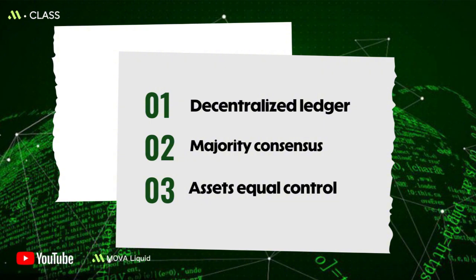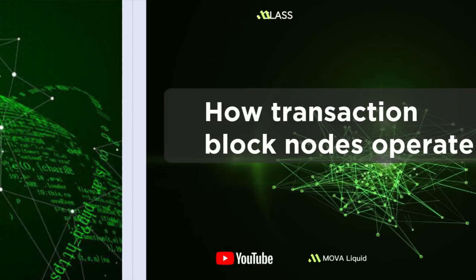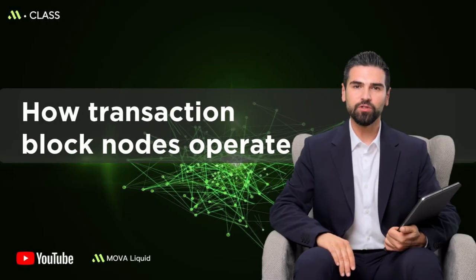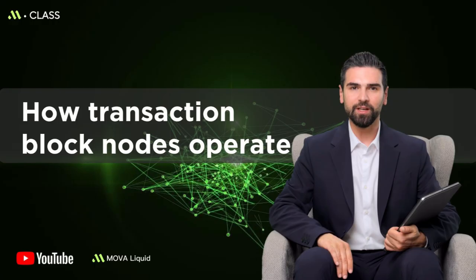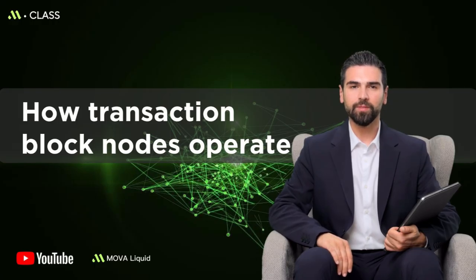The key as ownership reminds us that controlling the private key is equivalent to controlling the right to sign and dispose of assets. An on-chain transaction is a request to change state from A to B.